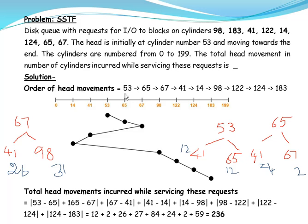To recap: we start from 53 and find the request closest to 53. Both 41 and 65 are equidistant, so we check the left side (41) and right side (65). There is a tie, so we resolve it in the direction of head movement — the head is moving towards the end, so from 53 we move to 65. For 65, the left side is 41 and the right side is 67; since 67 is closest, we move to 67 and proceed to get the full order.